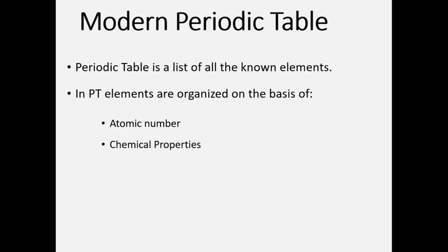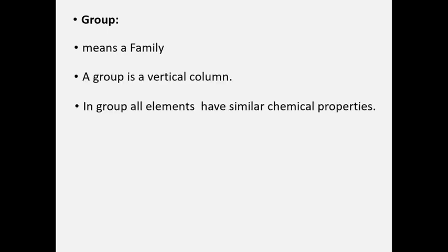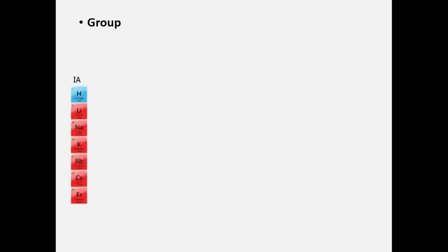The periodic table is arranged in groups and periods. Now one by one we discuss group and period. Group means a family. Group is a vertical column. In a group, all elements have similar chemical properties. The periodic table has a total of 18 groups. The numbering in the group uses Roman numerals and alphabet, a capital letter in English.